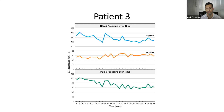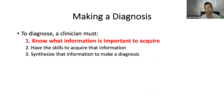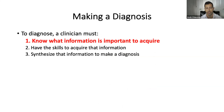With alcohol cessation and thiamine replacement, this patient's pulse pressure completely narrowed over time and his heart failure completely reversed. He no longer had heart failure, did not need any diuretics, and was completely cured. It comes back to knowing what information is important to acquire, acquiring that information, and then synthesizing it to make the diagnosis. To summarize: to make a diagnosis, we have to do three things — know what information is important to acquire, have the skills to acquire it, and synthesize that information.